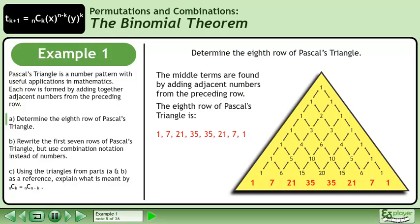The eighth row of Pascal's Triangle is 1, 7, 21, 35, 35, 21, 7, 1.